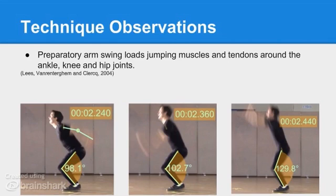An adequate arm swing is observed, which is an aspect of technique shown to increase take-off velocity and ultimately jump performance. The increase to velocity of take-off stems from a complex series of events, which allows the arms to build up energy early in the jump and transfer it to the rest of the body during the later stages. This energy came from extra work of the shoulder and elbow joints, as well as the hip.